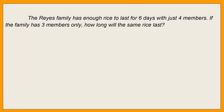Another example: The Reyes family has enough rice to last for 6 days with just 4 members. If the family has 3 members only — sabihin nating pumunta yung isang member sa probinsya — how long will the same rice last? Anong klaseng proportion ito? 6 days, 4 members. Mag-last yung kanilang kanin. It takes 6 days para maubos ng 4 members. Pero kung 3 members na lang, gaano nakatagal nilang maubos ang kanilang bigas? This kind of proportion is inverse.